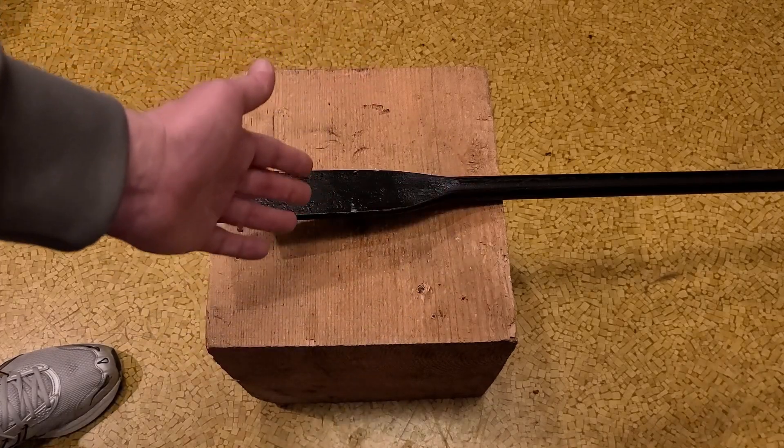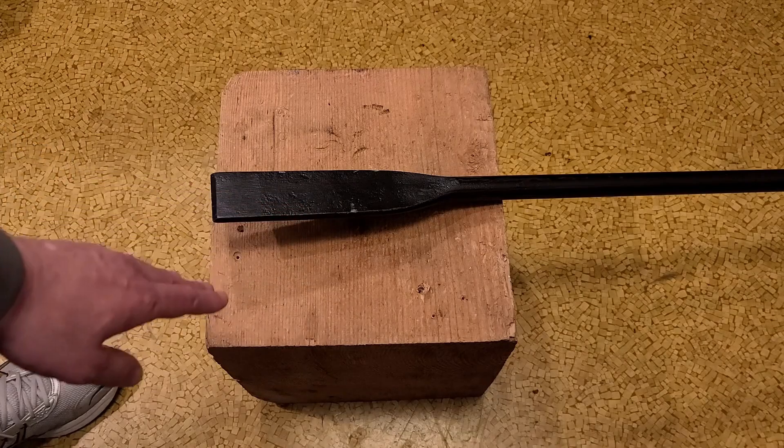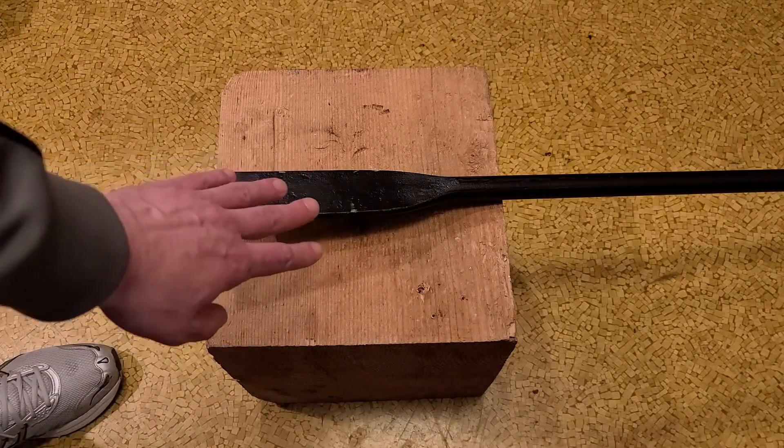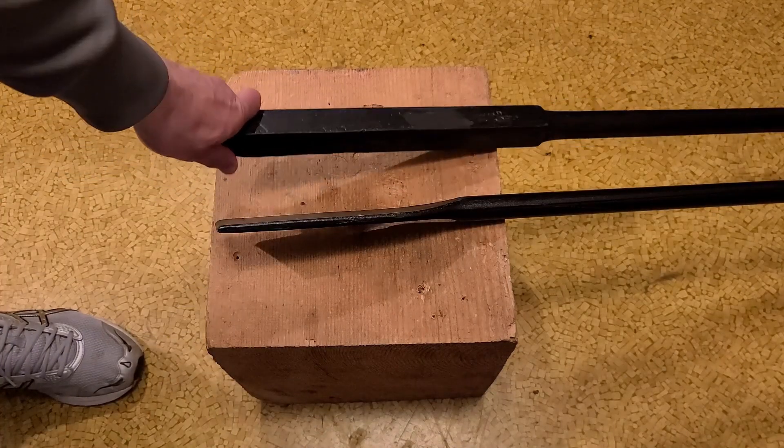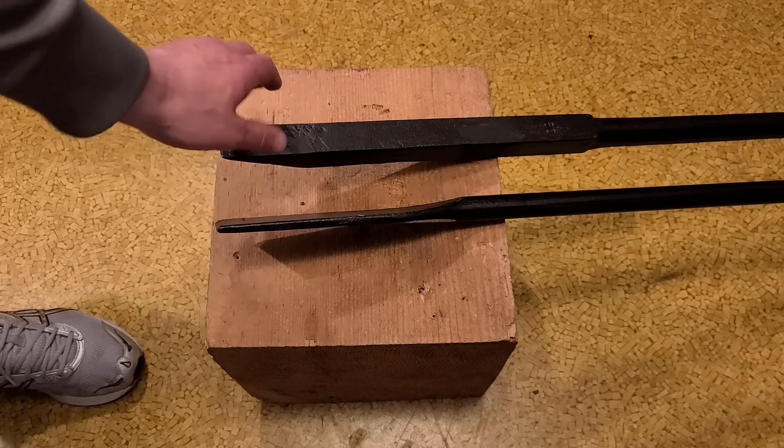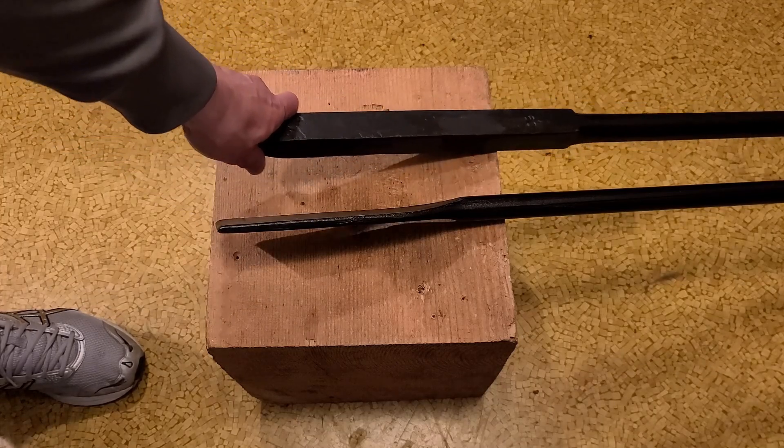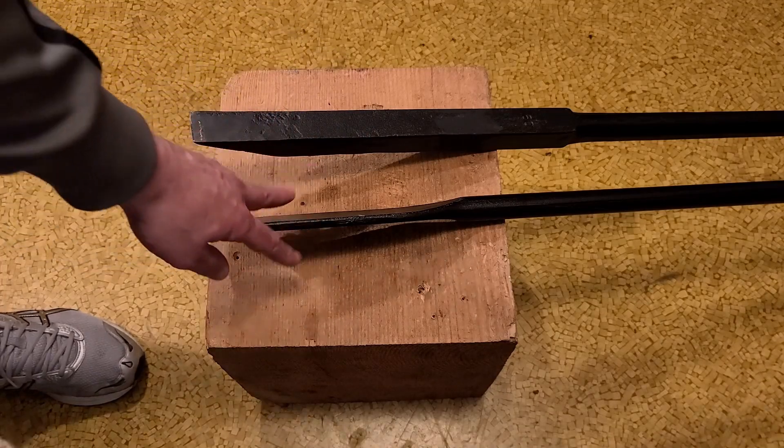It's also great to use in tandem with the rock bar. For $50, you can get both the rock or less than 50. You can get this and their 60 inch rock bar, this unit right here, which is also a really good deal. It can be used for similar types of operations as this. It just has a much heavier duty cross section for heavier duty prying activities.